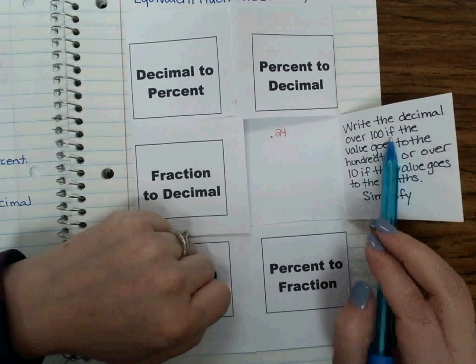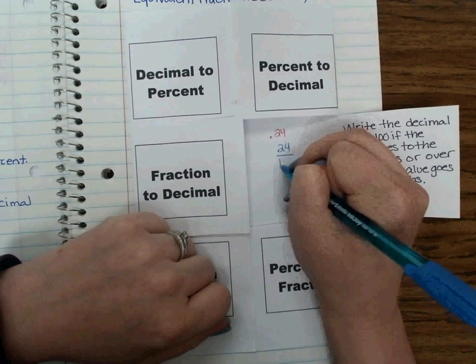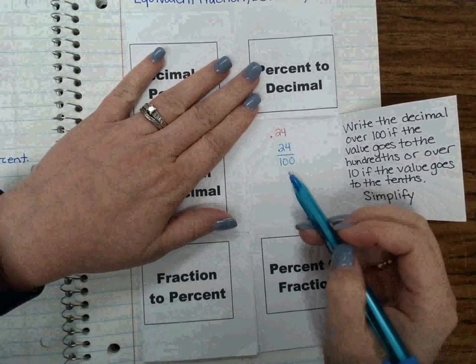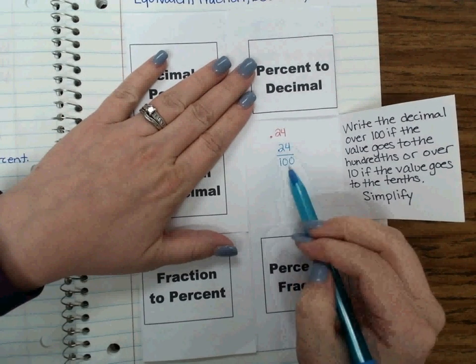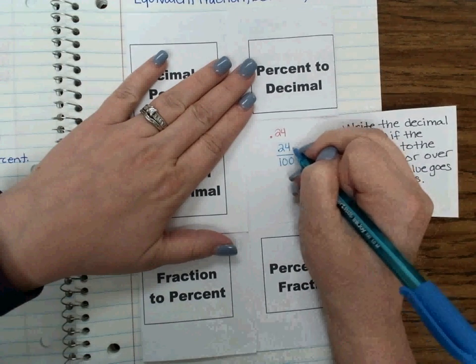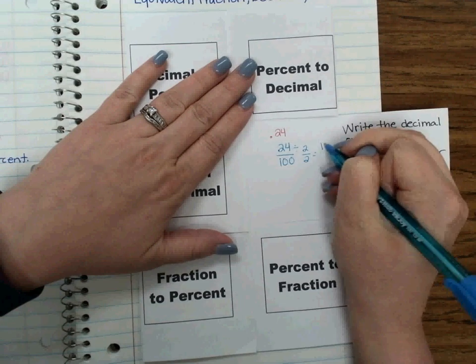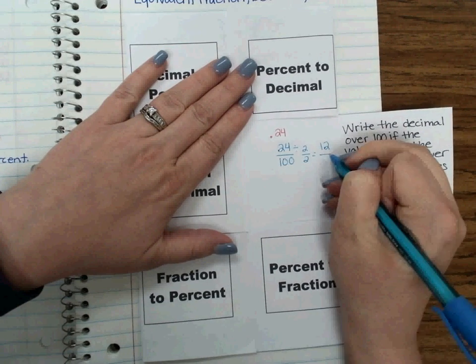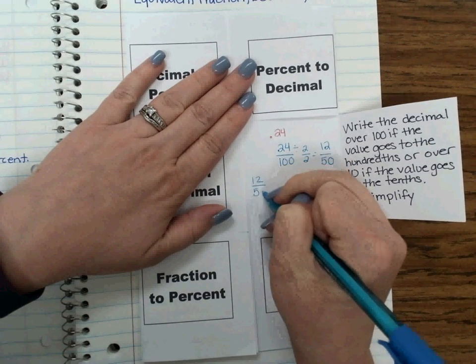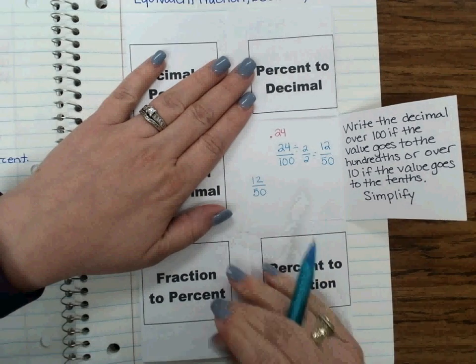So if it goes to the hundredths, you put it over 100. So this is 24 over 100. Now it tells me I need to simplify. Simplifying means reducing that fraction. What is something I can factor out of 24 and 100? Well, I know they're both even, so I can start off with 2. I'm going to divide by a 1-ster of 2. 24 divided by 2 is 12. 100 divided by 2 is 50. So now I'm going to rewrite it down here. 12 over 50. 12 over 50 and 24 over 100 are equivalent fractions. Is this in its most simplified form? No.